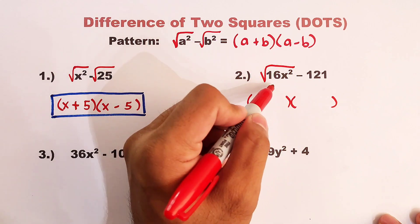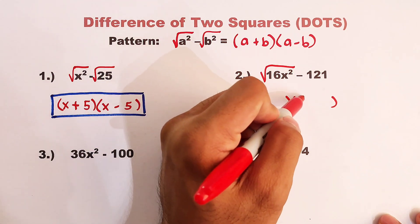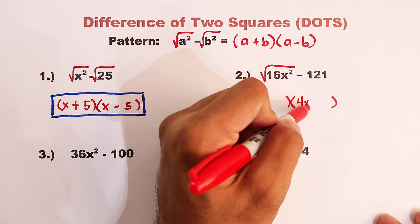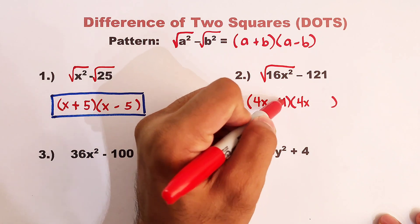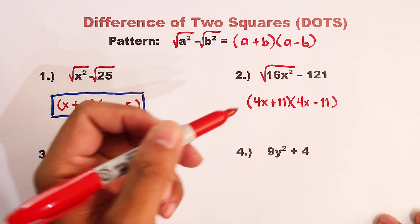Get the square root of the first term. The square root of 16 is 4. The square root of x squared is definitely x. And this one, the square root of 121 is 11. So we can put here plus and minus.